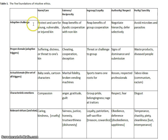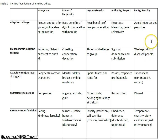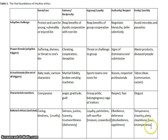For purity and sanctity, the fifth foundation, the adaptive challenge was avoiding microbes and parasites, which threaten health. The proper domain — the triggers — includes waste products and diseased people, things that are possible threats to the integrity of our body. The characteristic emotion is disgust. Researchers have found we are often disgusted by precisely those things that are potential threats to our body, and also to our soul, as anthropology research made clear. The virtues are temperance, chastity, piety, and cleanliness; the vices are lust and intemperance.